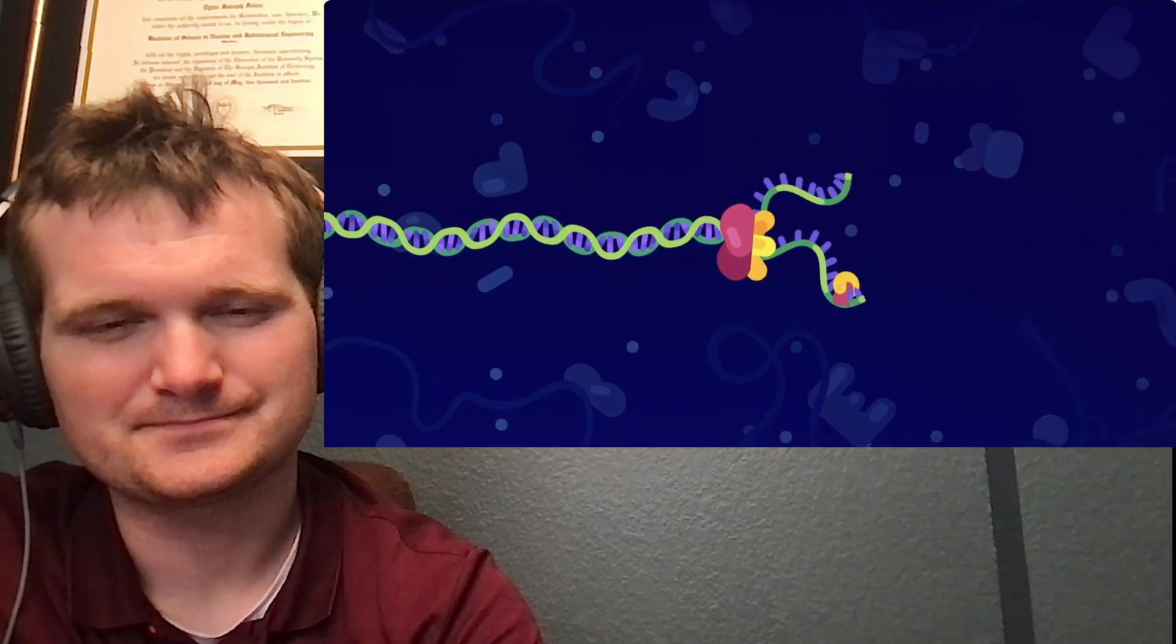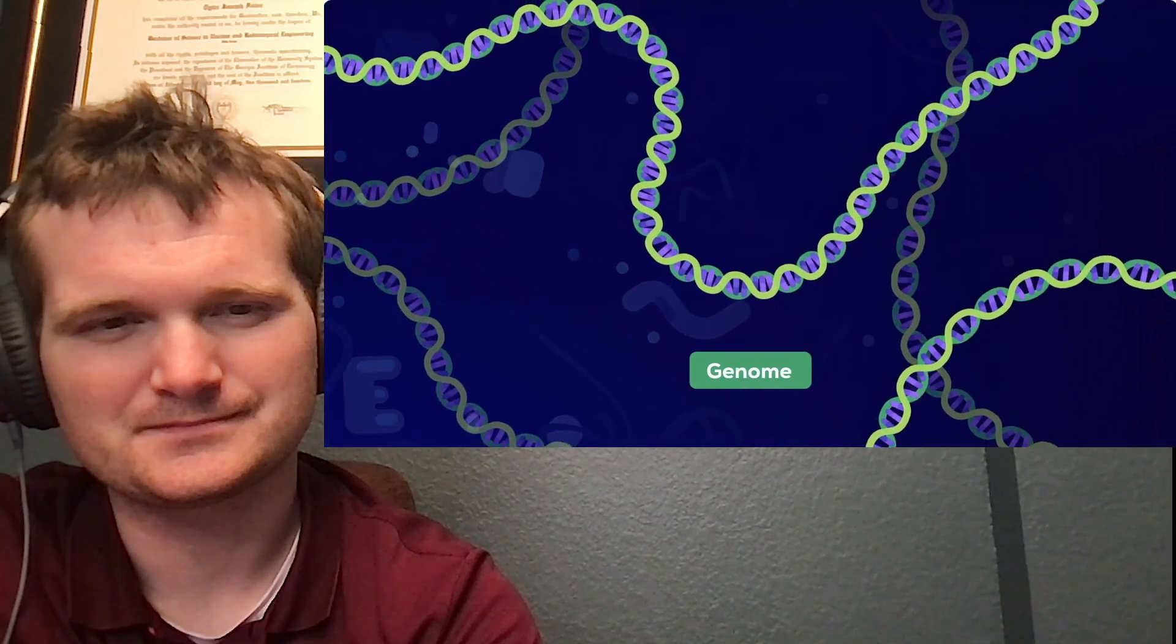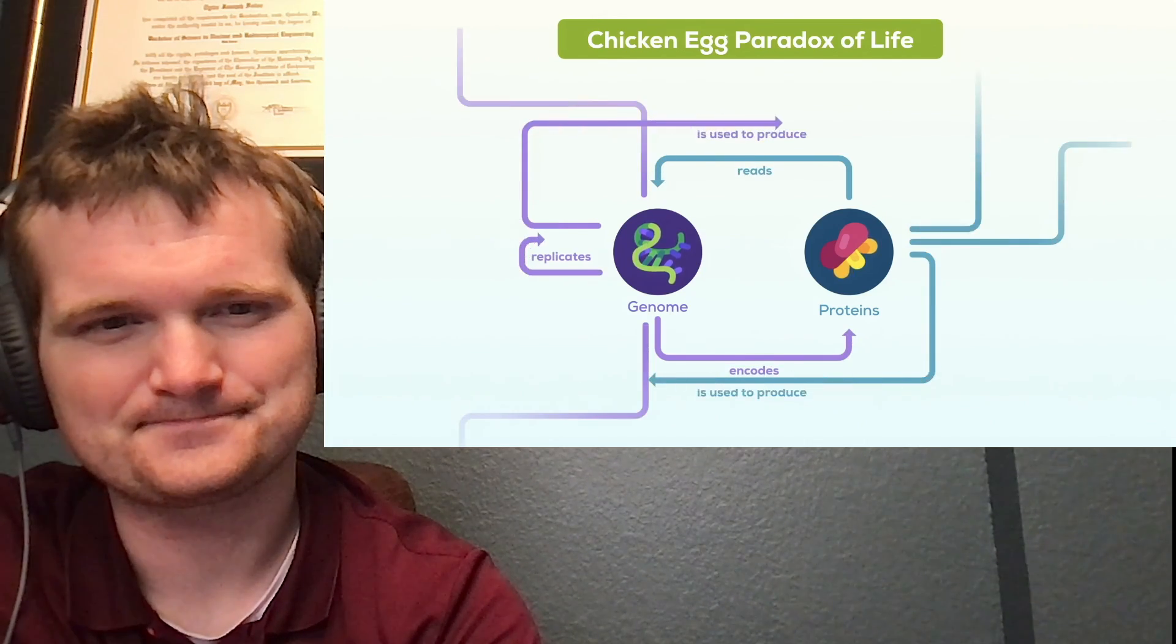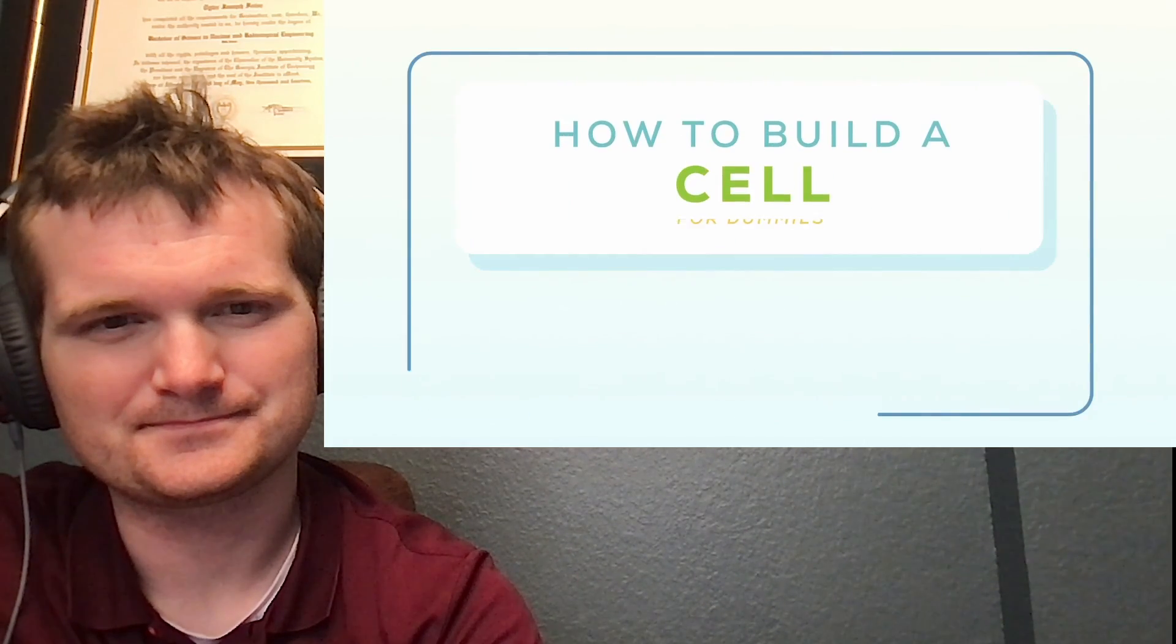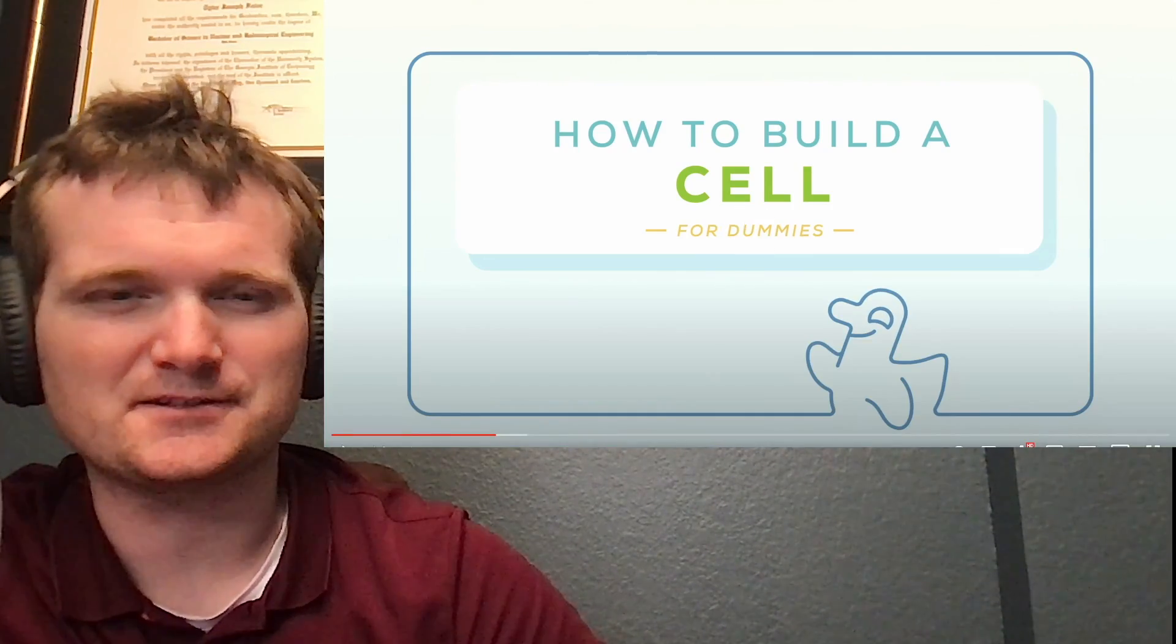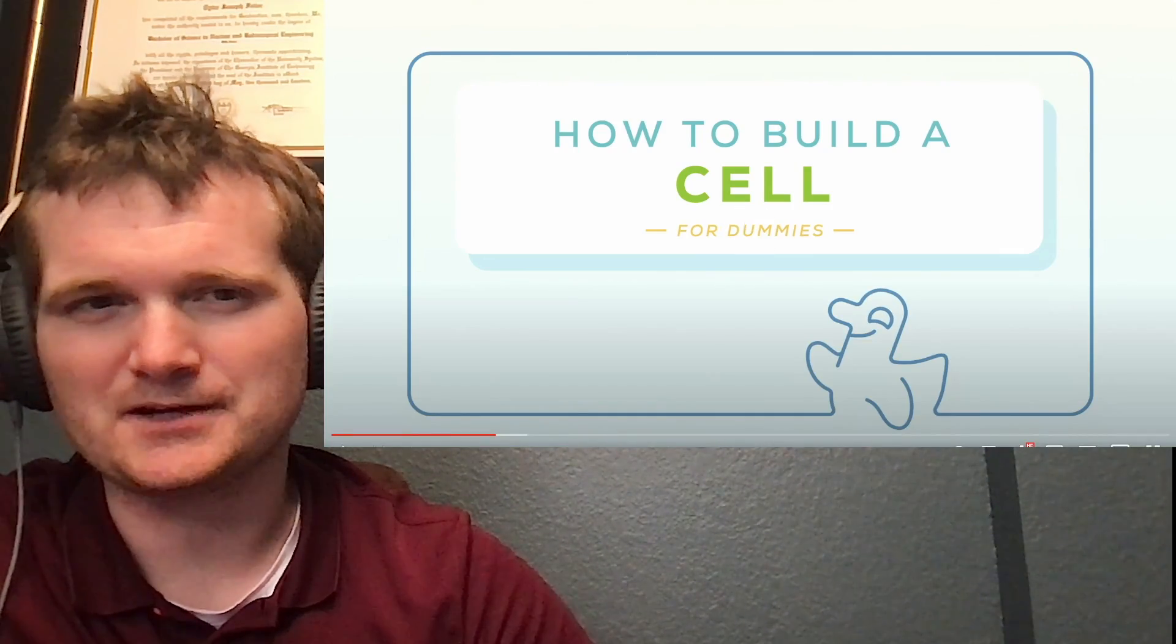Simplifying a lot, the problem is that to have a functioning genome, you need proteins. And to make those proteins, you need a functioning genome. Both proteins and genomes are super long molecules made of pretty complex blocks that are extremely difficult to assemble by chance. It's a chicken-egg paradox with several chickens and eggs. Once you have a finished cell, the whole system works efficiently.